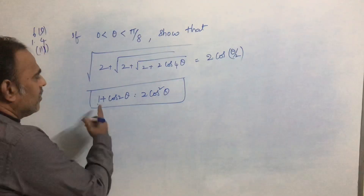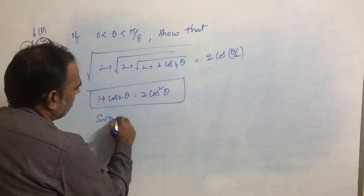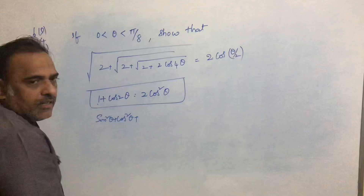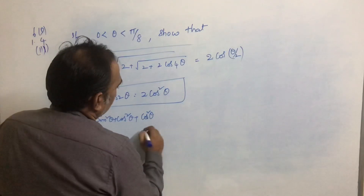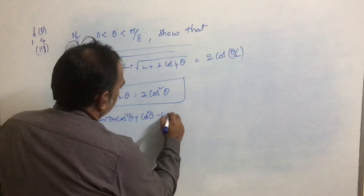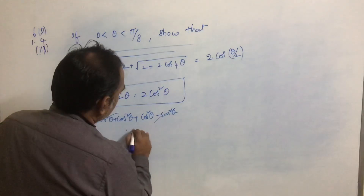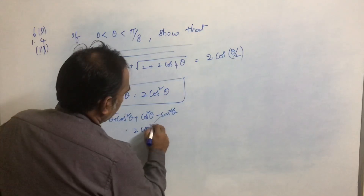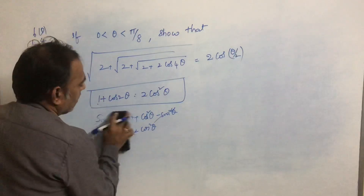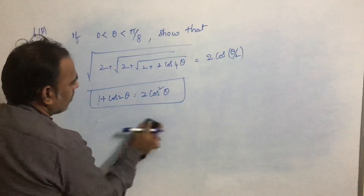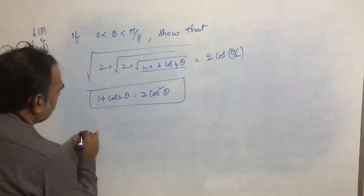Let me remind you: 1 can be written as sin²θ + cos²θ, and cos2θ = cos²θ − sin²θ. Adding these, the sin²θ terms cancel, giving 1 + cos2θ = 2cos²θ. Just remember this formula.